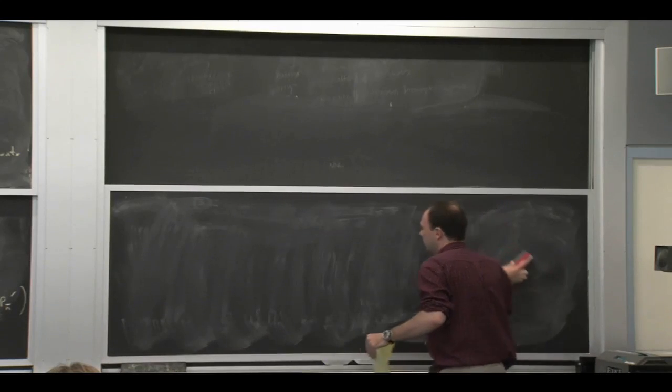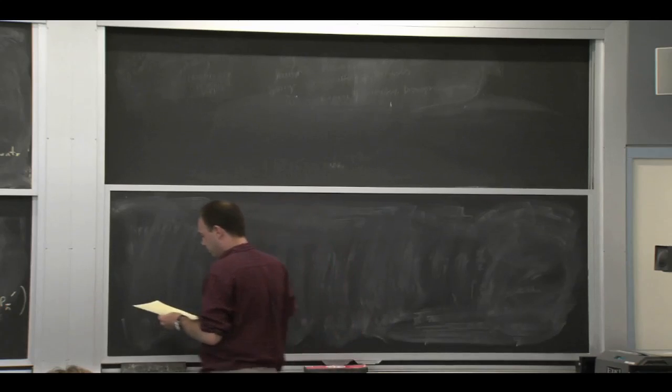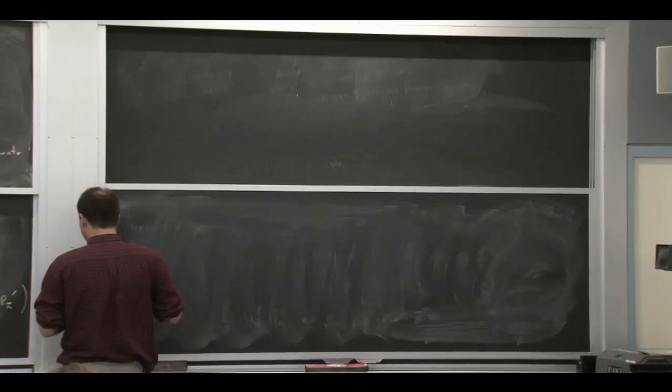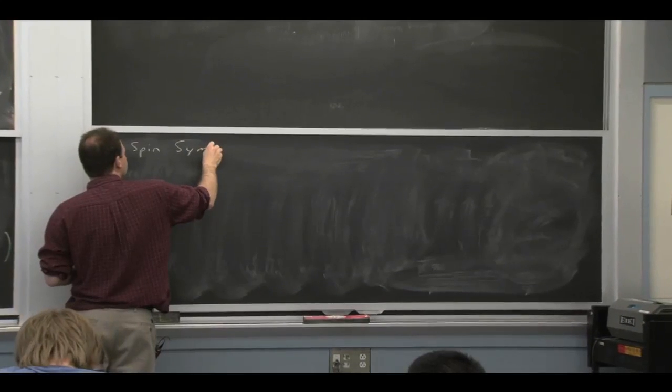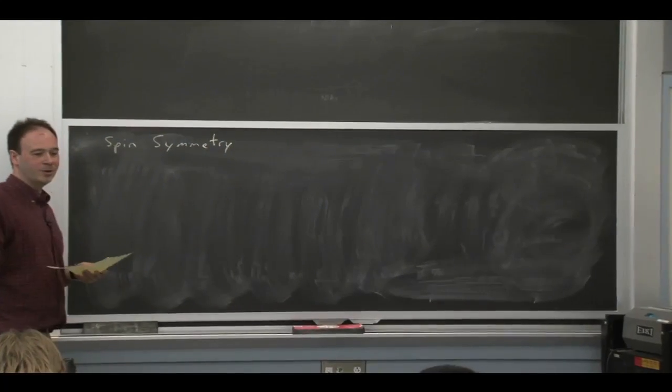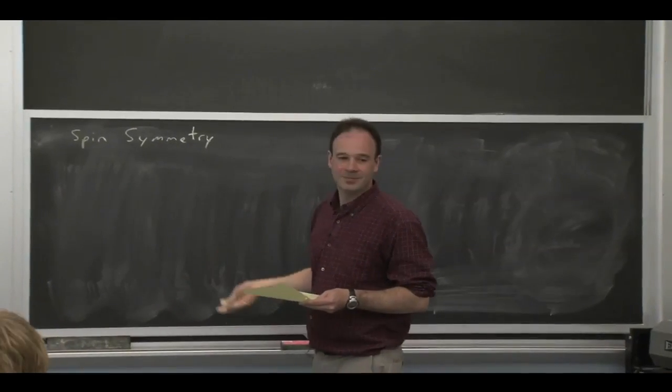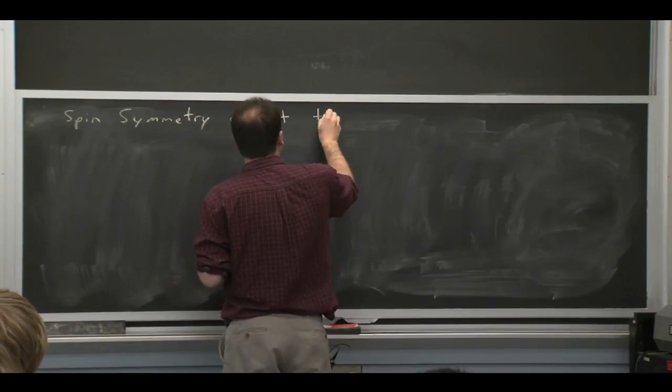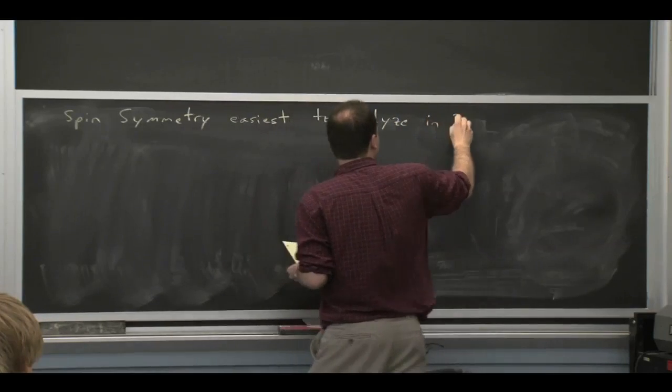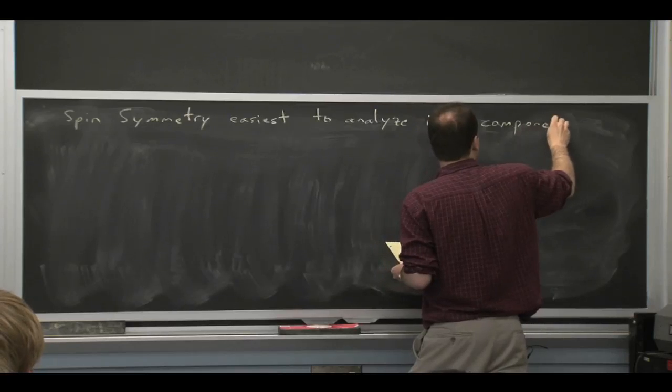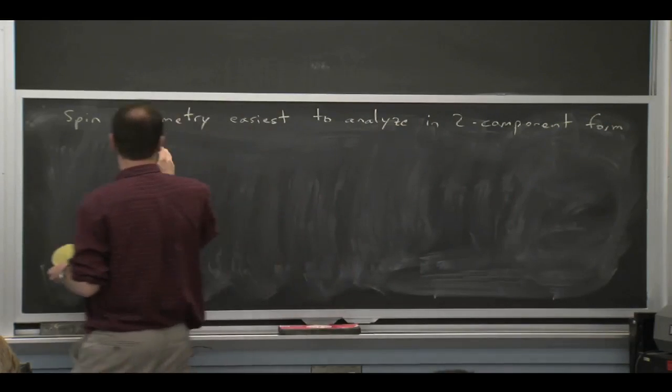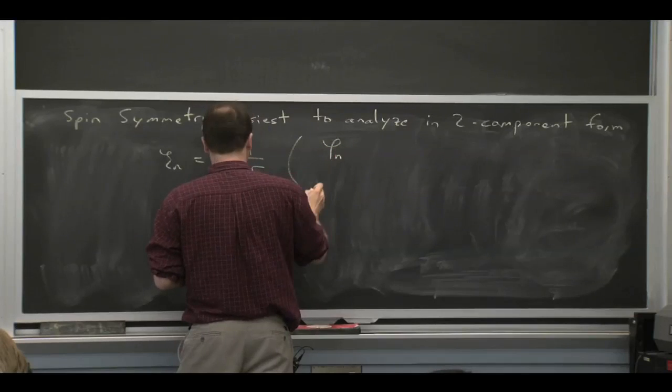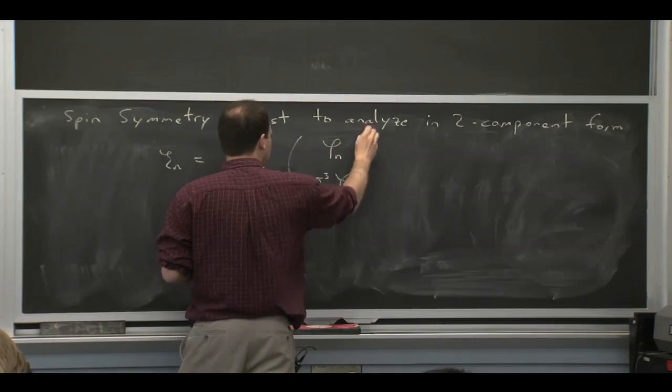So let's write down a two-component version of our collinear quark Lagrangian. You can do the same thing, of course, in HQET. You write down a two-component version rather than a four-component version. If you have a four-component version, it has this projection relation. If you have the two-component version, the projection relation is built in. The reason to consider the four-component version is if you want to couple this object to four-component fields, like the UltraSoft field, then it's a nice thing to have a four-component version. But some things are easier in two components.